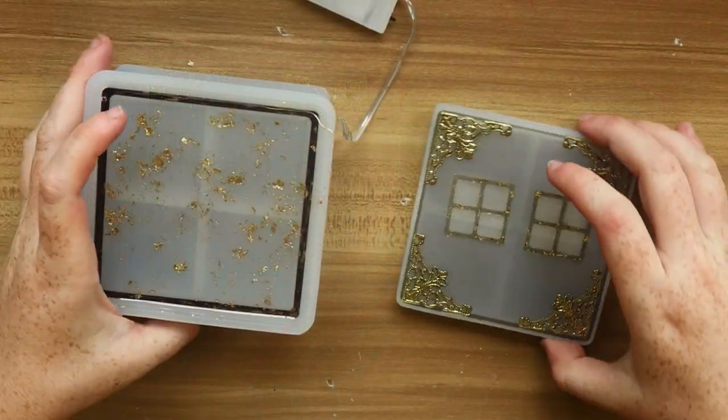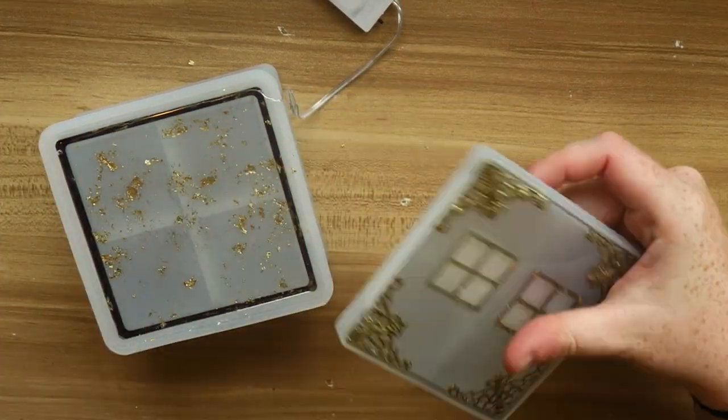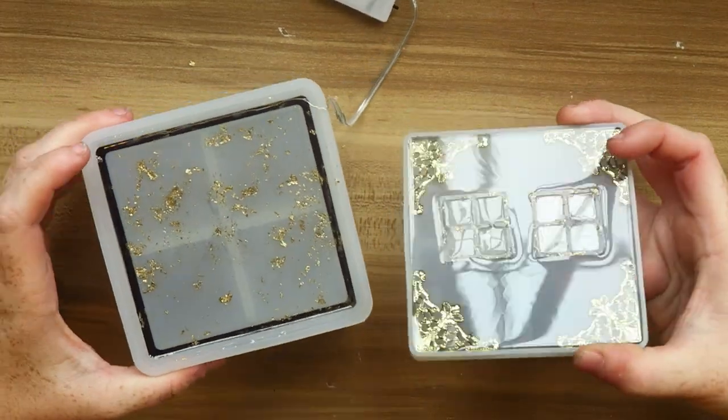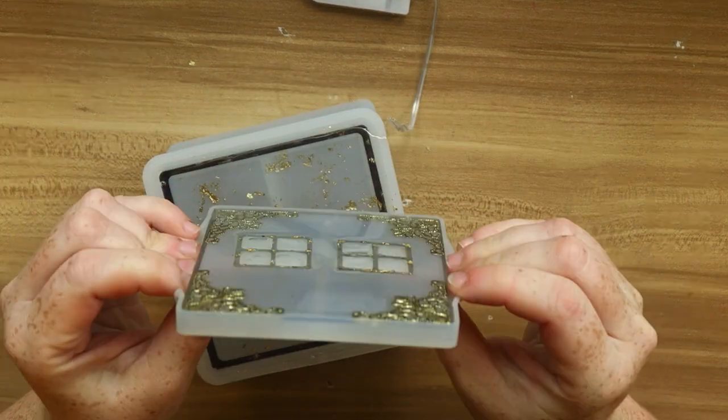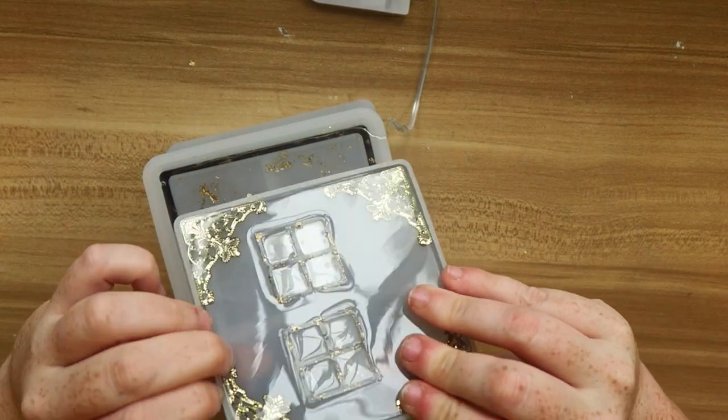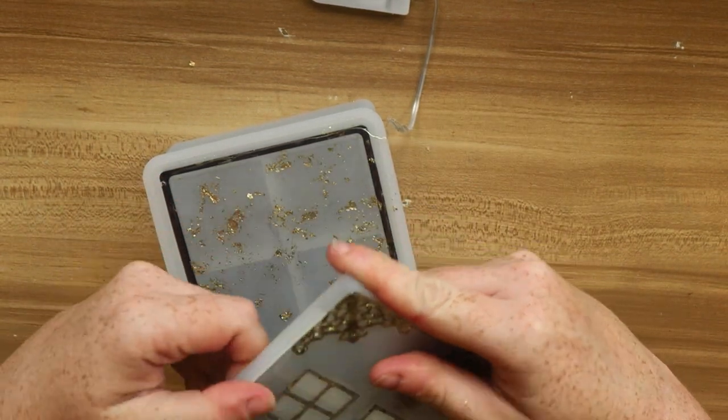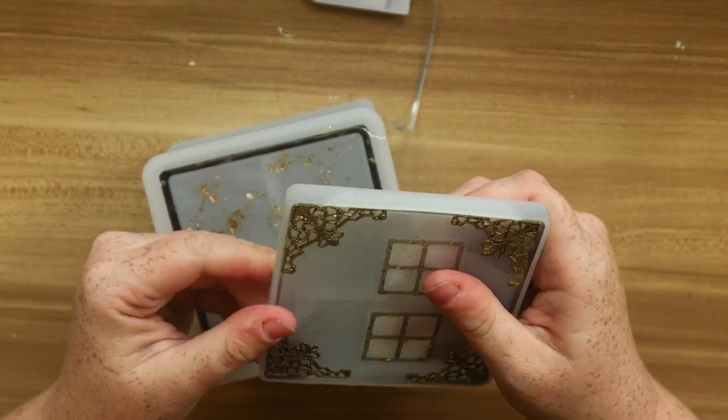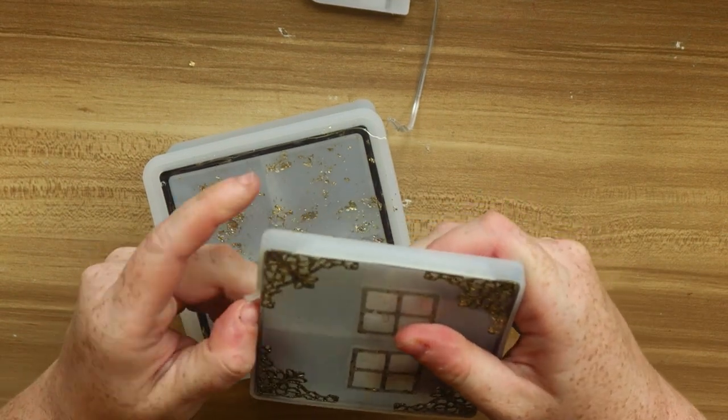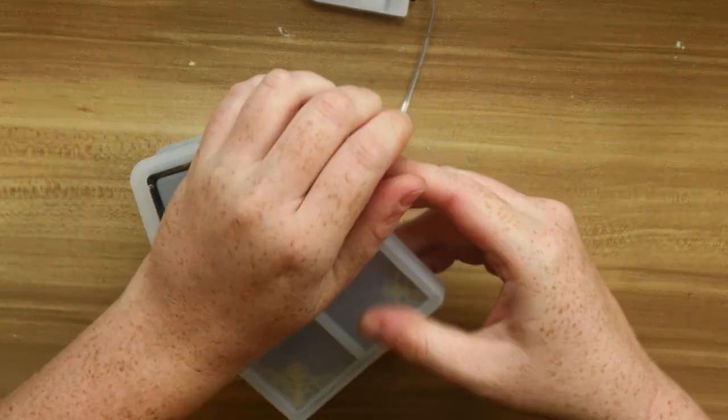I like to give a 3 to 1 ratio resin 2 to 3 days to fully cure. I was a little bit impatient and I only waited 24 hours before unmolding, and then I realized I probably should have given it at least 2 days. But that's okay because as soon as I unmolded it, I left it to the side and it finished curing on its own. So 3 to 1 ratio resin can take a little bit longer to cure than a 1 to 1 ratio resin.